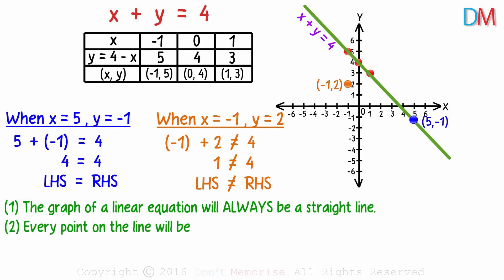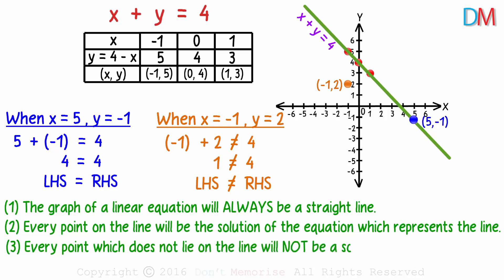Second, every point on the line will be the solution of the equation which represents the line. And third, every point which does not lie on the line, will not be a solution of the linear equation which represents the line.